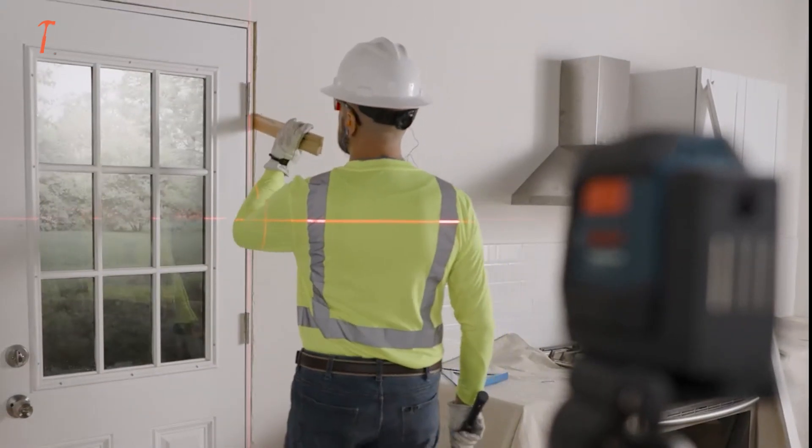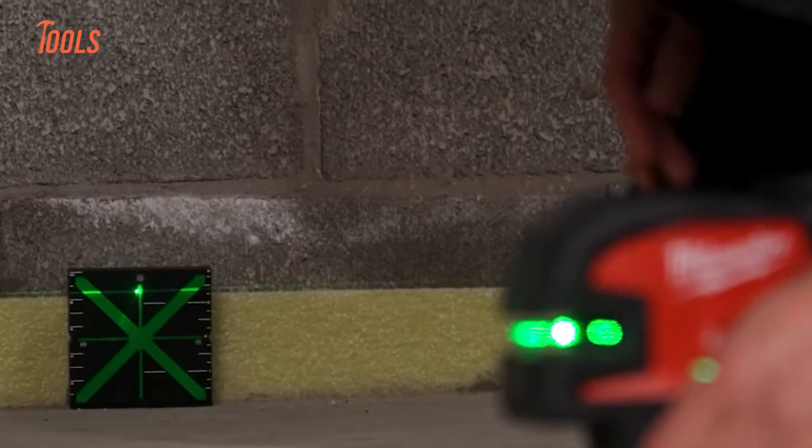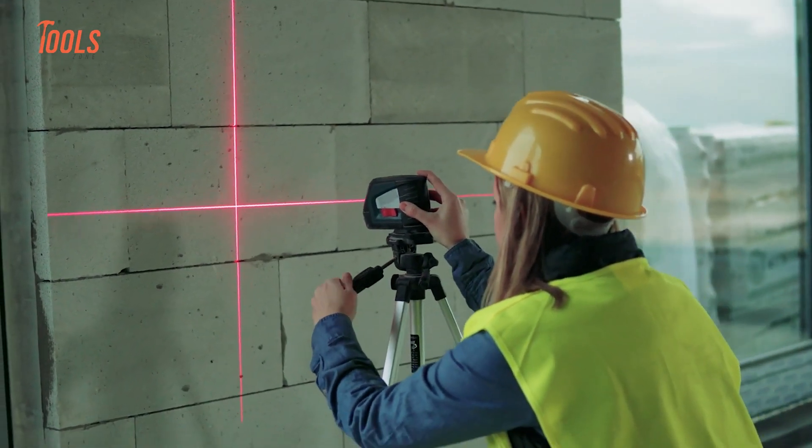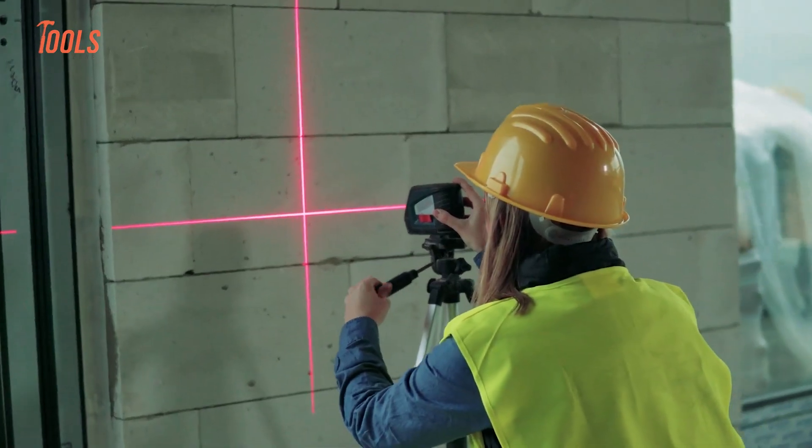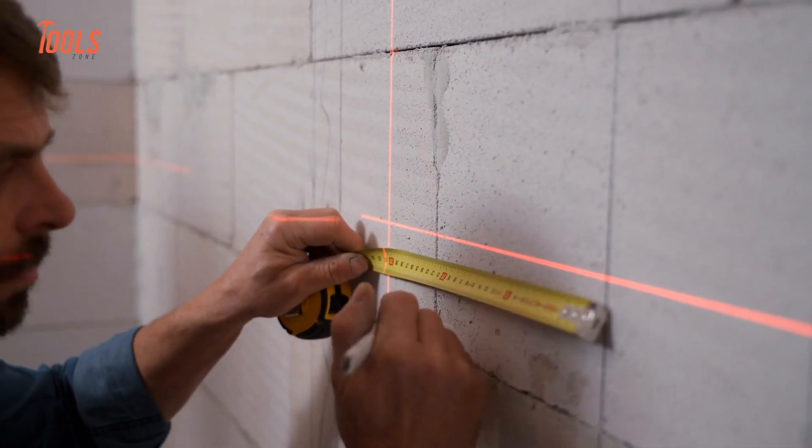Another big difference between cheap and premium laser levels is how they handle leveling. The cheaper models usually require manual leveling, which means you have to adjust them yourself, using a bubble vial or knob until they're straight. It works, but it takes time, and can be a bit tricky.